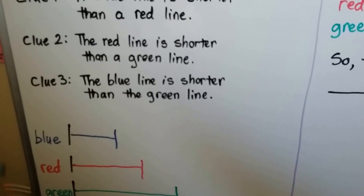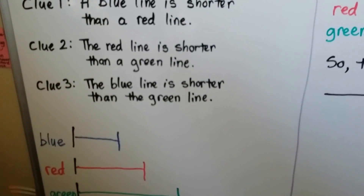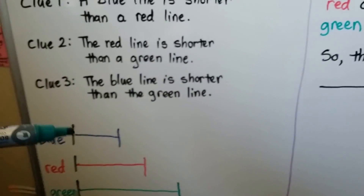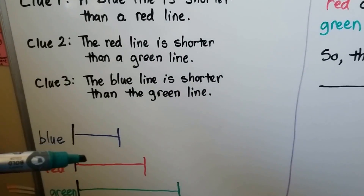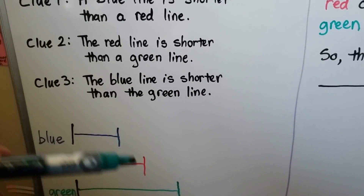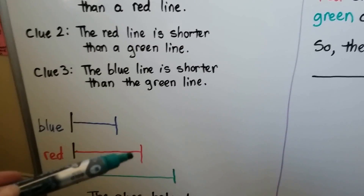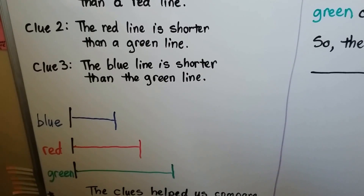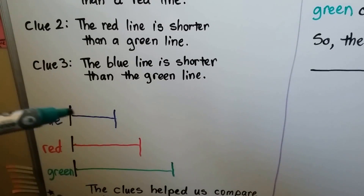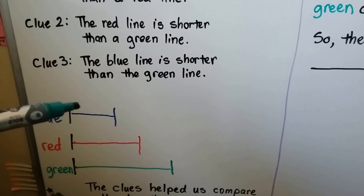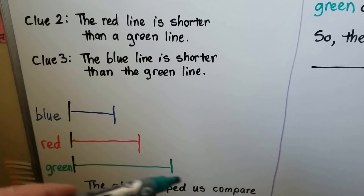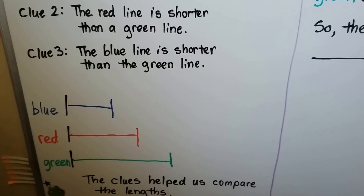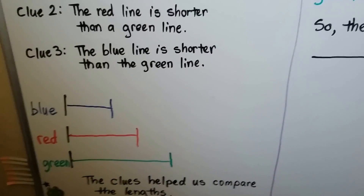Now we can check it and see if it's true. A blue line is shorter than a red line — yes, it is. The red line is shorter than the green line. And the blue line is shorter than the green line. They're all true. We did it correctly.